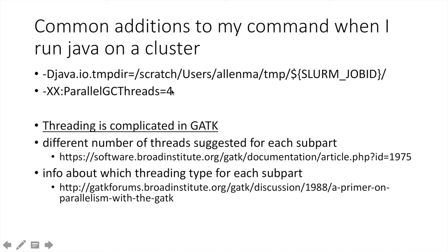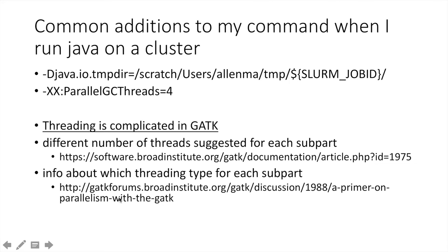Threading is a little complicated in GATK because we're going to go through several sub-programs, and the different sub-programs actually use different numbers of threads — at least the suggested number of threads differs. I've put two websites here that I found really useful: one tells you the number of threads suggested for each of the sub-parts you're going to be running, and the other covers the extra options some programs need to specify thread count. Generally those options are NT and NCT, but you can read about it on those two websites. Do be aware that GATK has been very clear that threading can give you different results than running on a single thread.